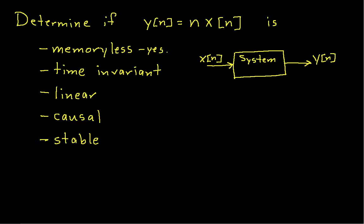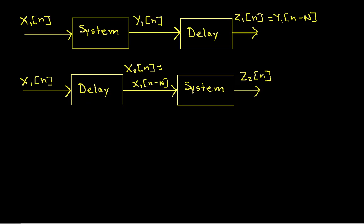Now for something a little less straightforward. Let's determine whether or not this system is time invariant. The way you tell whether or not a system is time invariant is you do the following experiment: you take a signal x1, run it through the system, get the output, then delay that by some number of samples, say capital N. Then you take the same input, delay it first, and then run it through the system. The goal is to see if those two outputs are the same. If they are, the system is time invariant.